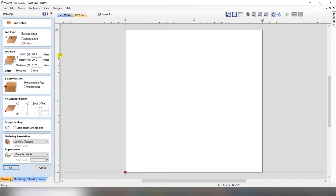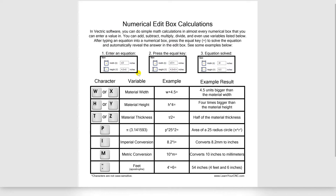Now we're going to take a look at how to do calculations inside of the edit text boxes. Almost every box that you can enter a number in, you can also do a calculation in. In this chart, I show you examples of different calculations you can do: addition, subtraction, multiplication, division. You can use any of these variables and do either simple or complex calculations inside the text box.